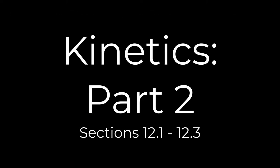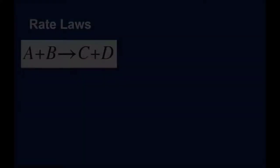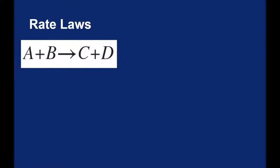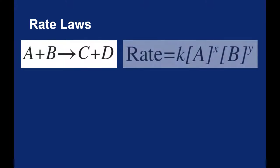A rate law is a tool used to predict the rate of a reaction. Starting with something generic like A plus B turning into C plus D, the rate law for this process would take a specific form where the rate is dependent on the concentrations of the reactants.